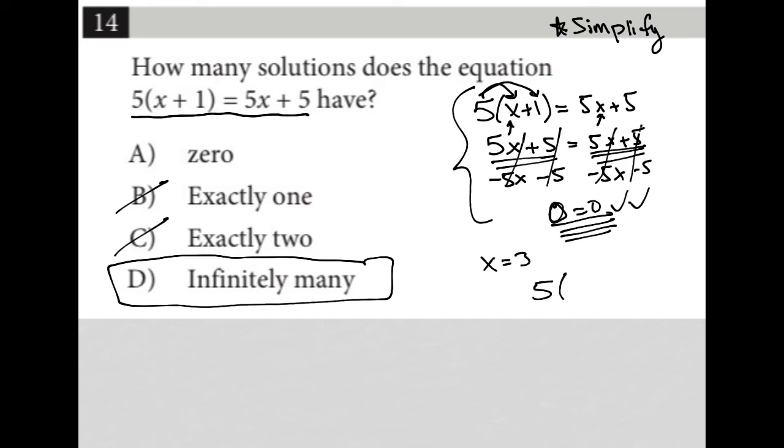I'd have 5(3+1), which makes that 4, equals 5 times 3 plus 5. And we'd see that both sides give me 20. And then again, that would make zero cross out as an answer.